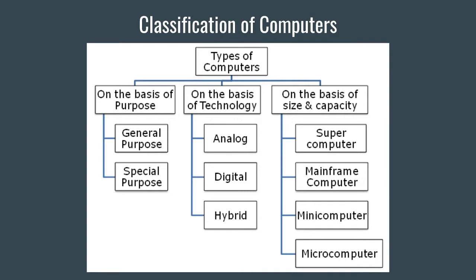General purpose computers are those which can perform multiple tasks. For example, our laptops or PC desktops — using these we can compute complex polynomials, perform basic calculations like addition and multiplication, play games, watch movies, and listen to audio.